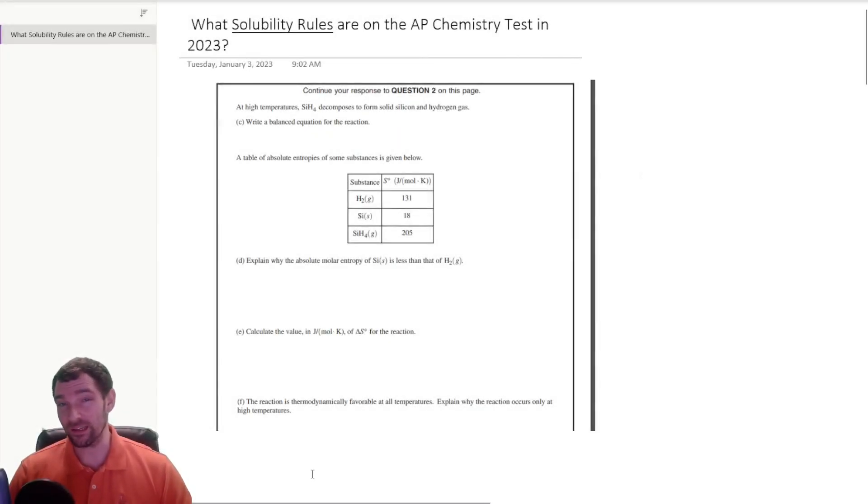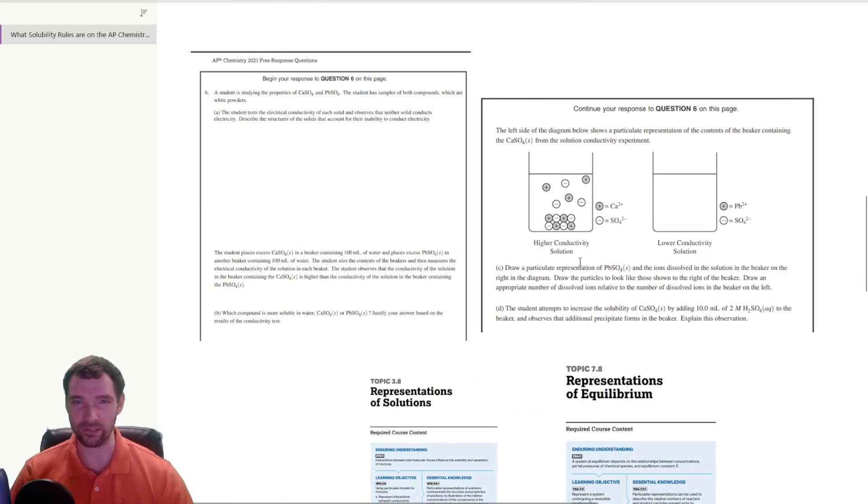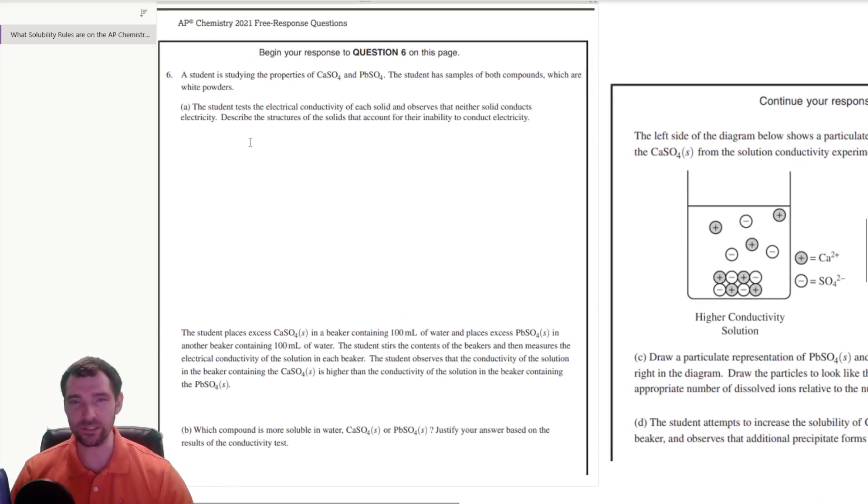We're going to start with not a solubility example, but I wanted to highlight how they give you the state of matter as well as the chemical formula. Here they didn't tell you what solid silicon was or hydrogen gas was, but if you read lower down in the problem, you can usually get that information from the context. A big thing on the test is that you don't need to know what formulas are or how things are written. They've been moving away from that.